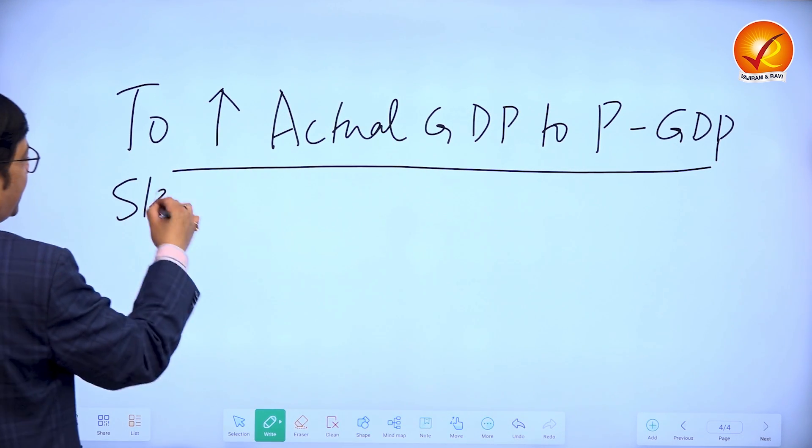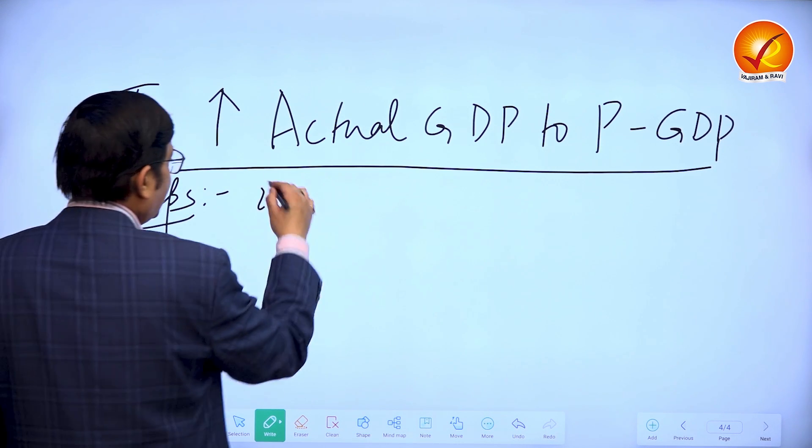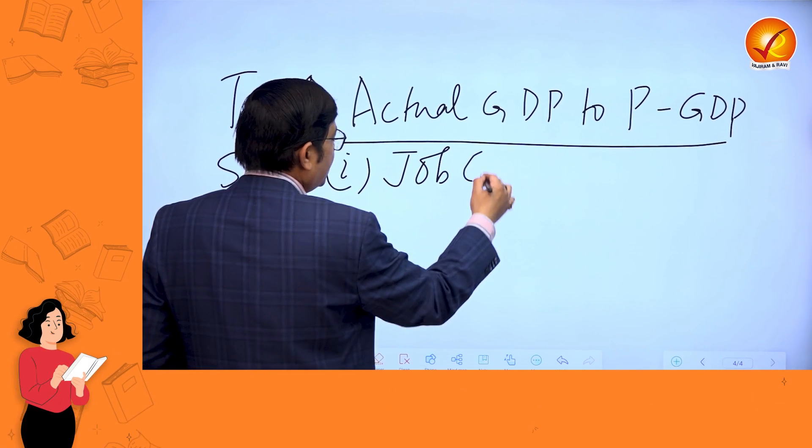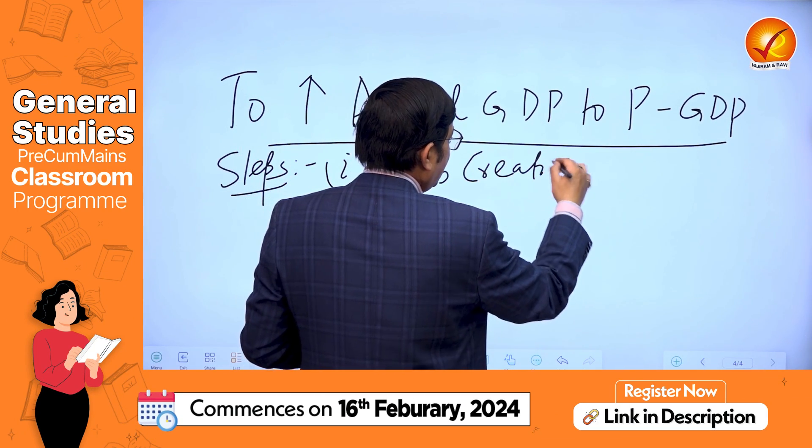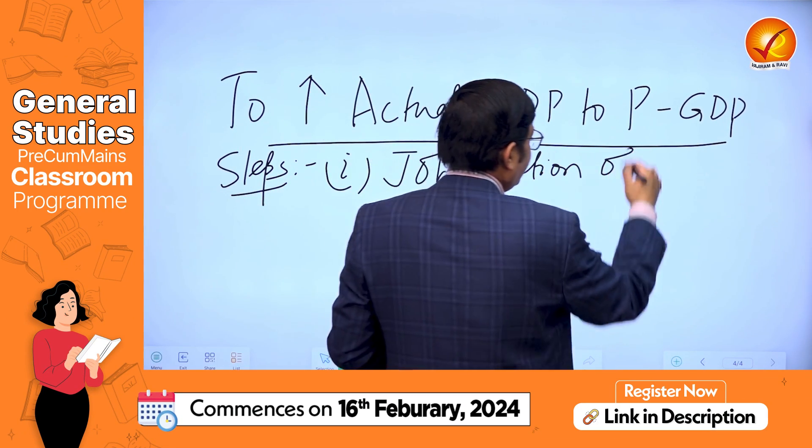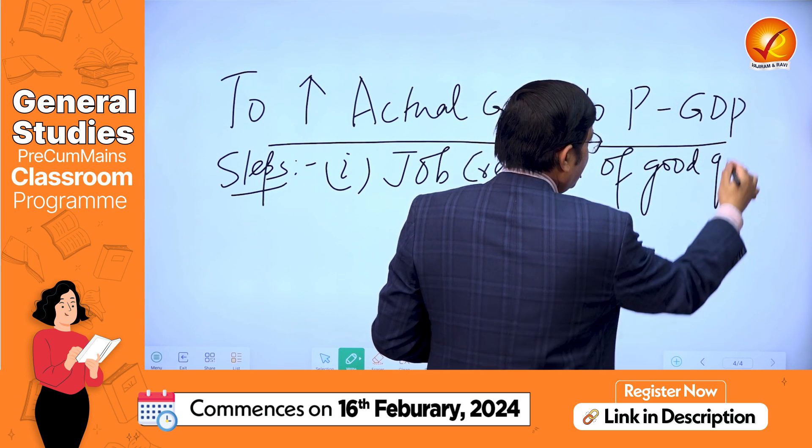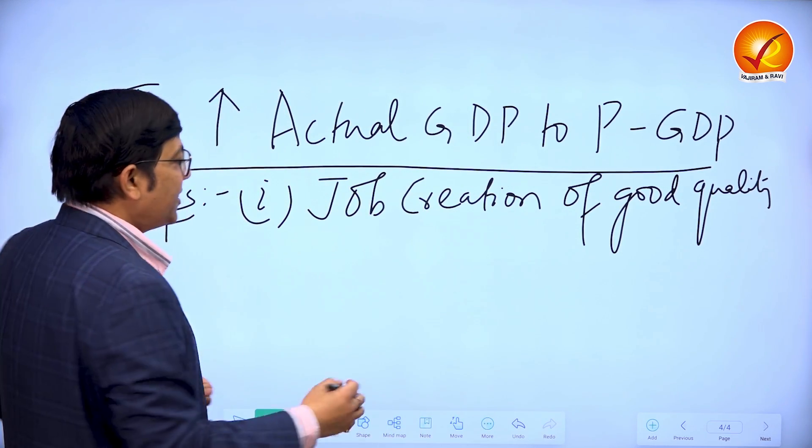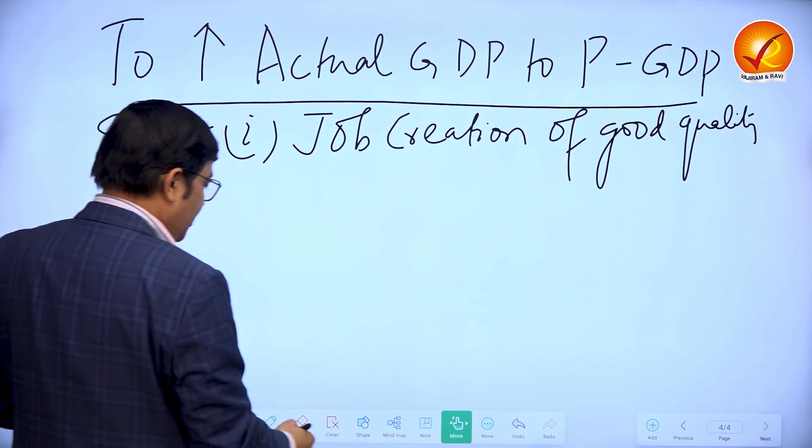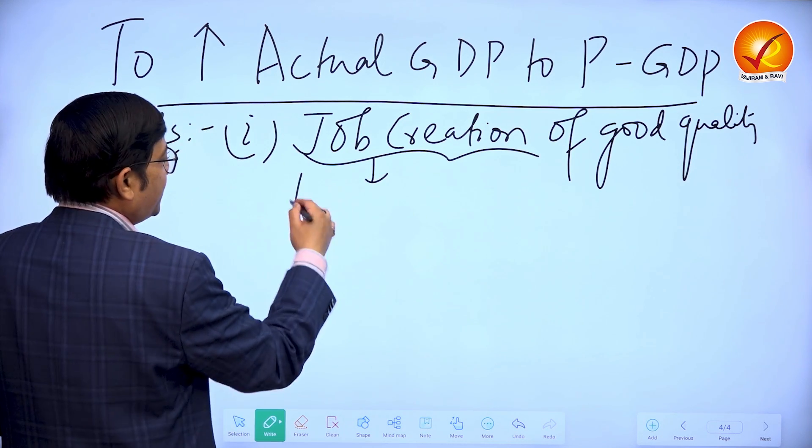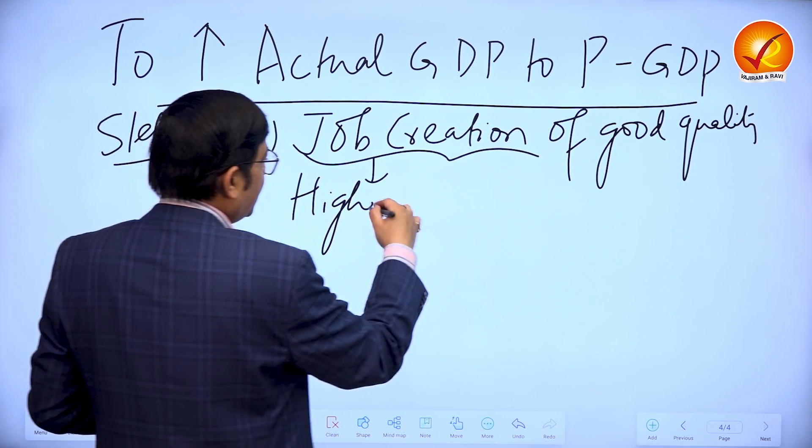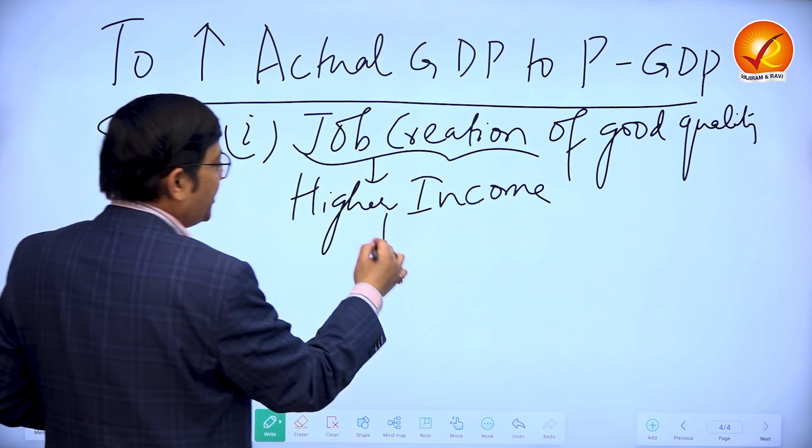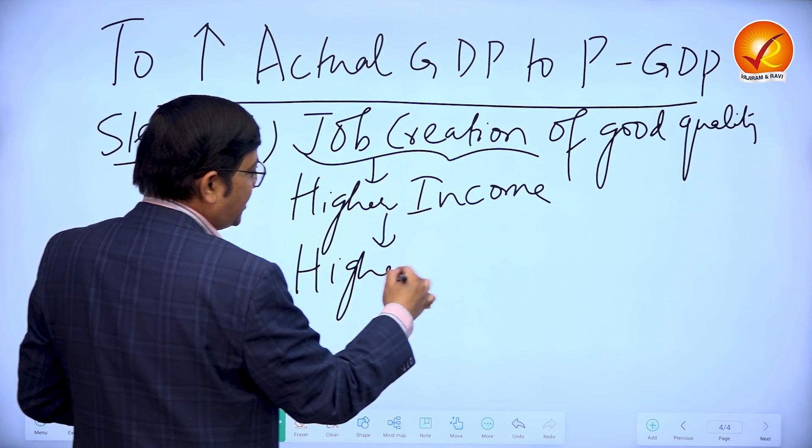The steps that can be taken are: 1. Job creation and in particular job creation of good quality. Let's understand this logically. When the job is created and the jobs are of good quality, that leads to higher income. Quite common sense logic. And higher income leads to higher consumption expenditure.